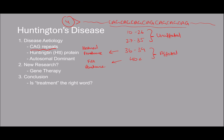So it's caused by this CAG repeat. This gene codes for the huntingtin protein - referred to as HTT. If you have a mutant protein, i.e. too many repeats, we refer to it as mHTT - a mutant huntingtin protein. The other important thing is that it's autosomal dominant, which means if one of your parents has Huntington's, you have pretty much a 50% chance of getting it.